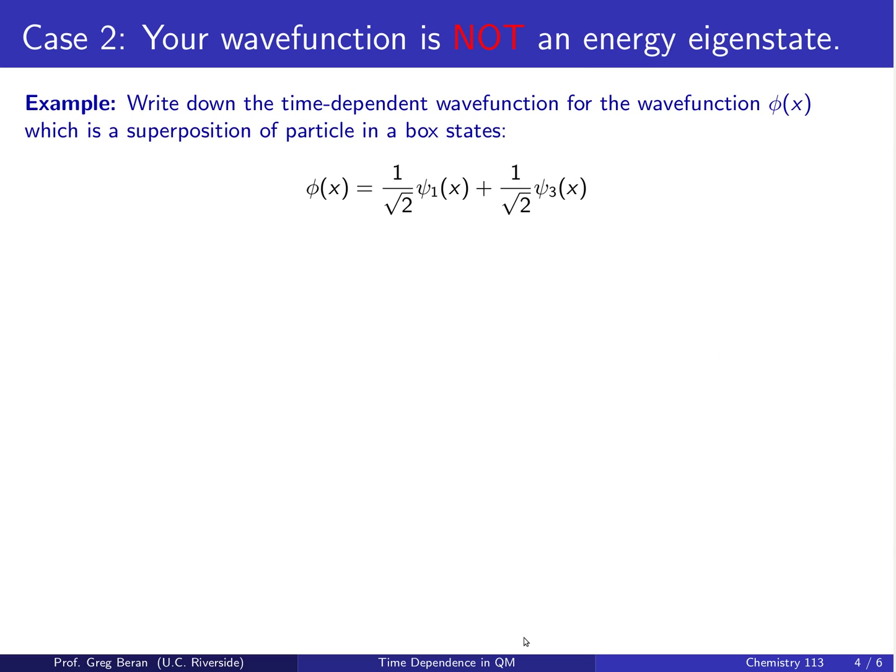Now, what if our wave function is not an energy eigenstate? Well, we can go ahead and write down the time-dependent wave function in that case just by thinking of the wave function φ, whatever our current wave function is, as a superposition of energy eigenstates.